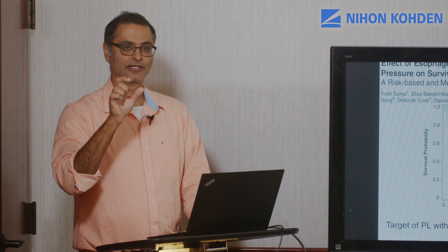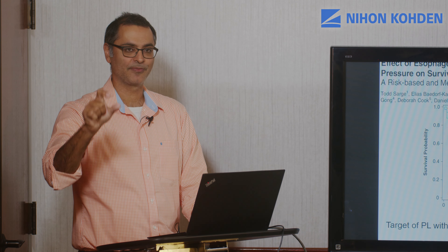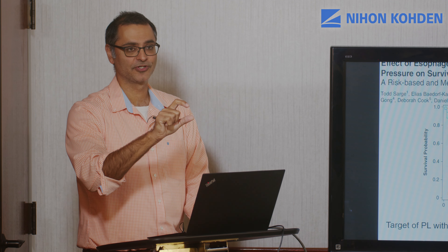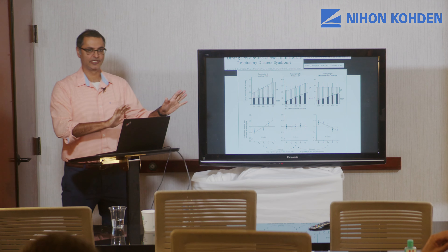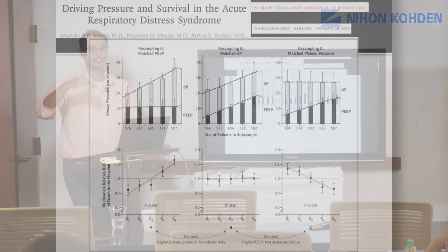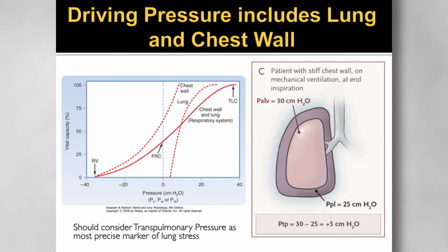Looking at the first EPivent trial published in 2008: it used a transpulmonary-pressure-guided strategy for PEEP, targeting 0, +2, +4, or +6 cmH₂O at end-expiration based on FiO₂ — higher positive transpulmonary pressure for more hypoxemic patients. The comparison was the low PEEP/FiO₂ table from ARDSnet. There was benefit: the esophageal pressure approach yielded better P/F ratio, better compliance, and higher PEEP values, translating to a near-significant clinical outcome.